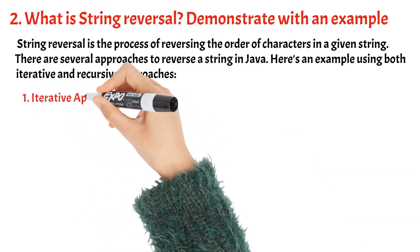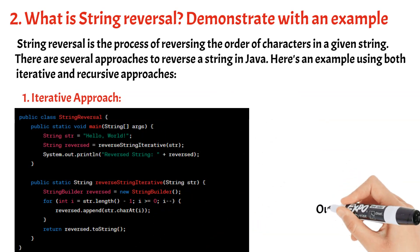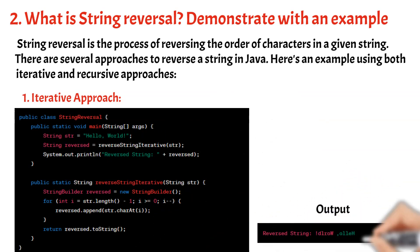One: Iterative approach. In this example, the reverseString iterative method uses a StringBuilder to build the reversed string. It iterates through the input string STR from the last character to the first character and appends each character to the reverse StringBuilder. Finally, the reversed string is obtained by converting the StringBuilder to a string using the toString method.